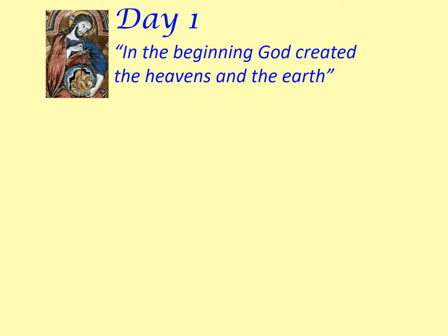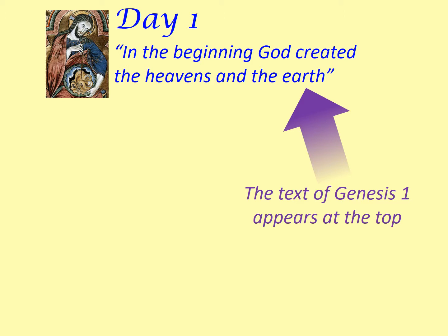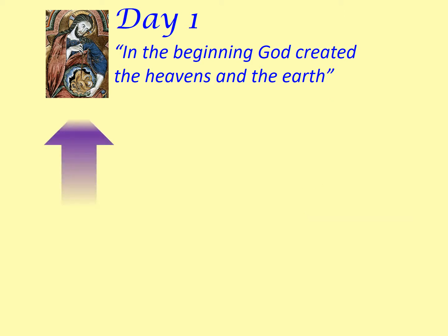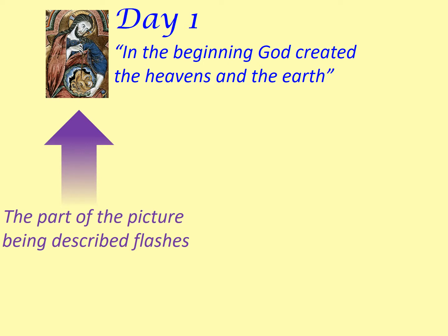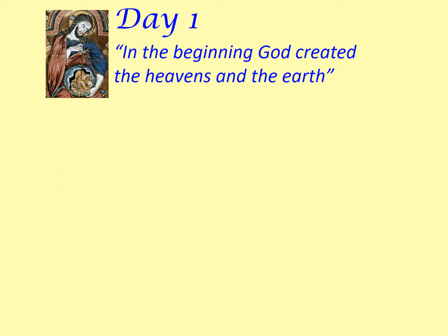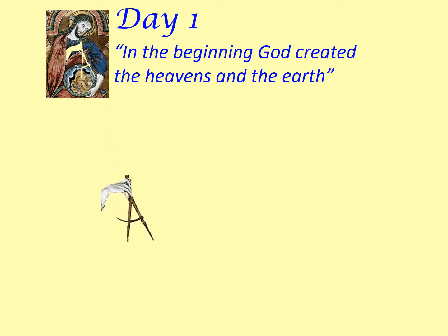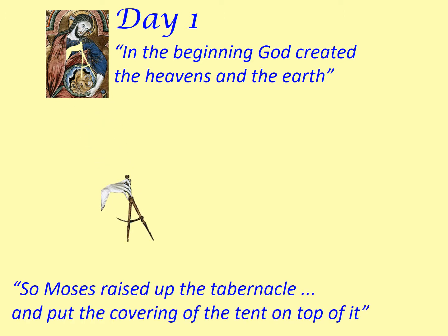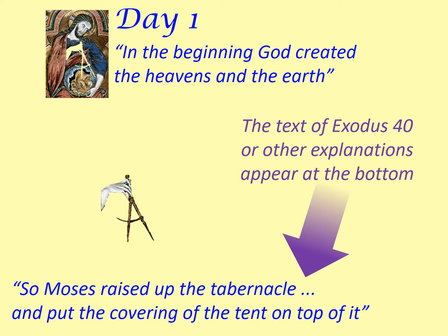The text of Genesis 1 appears at the top. The part of the picture being described flashes. So Moses raised up the tabernacle and put the covering of the tent on top of it. The text of Exodus 40, or other explanations, appear at the bottom.